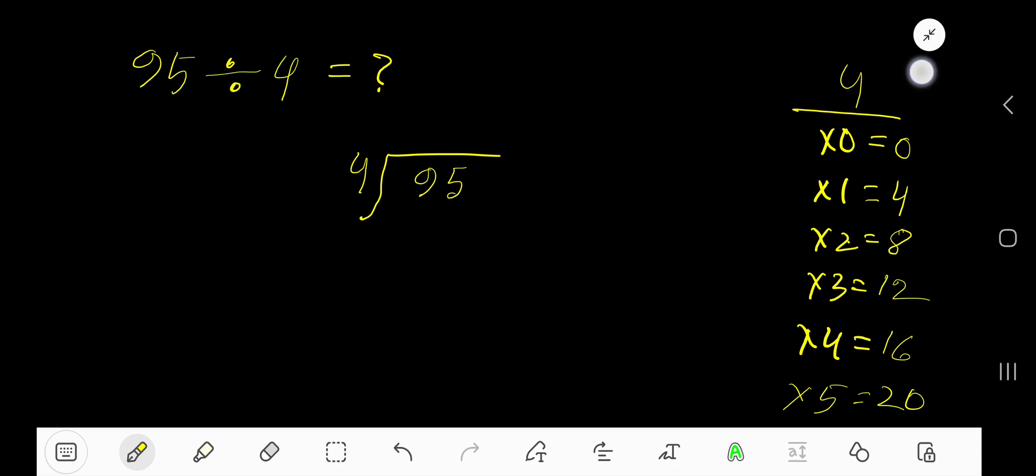95 divided by 4. The divisor is 4, so we need the multiplication table of 4. 4 times 0 is 0, 4 times 1 is 4, 4 times 2 is 8, 4 times 3 is 12, 4 times 4 is 16. To find the multiplication table of 4, just add 4 with the previous step: 0 plus 4 is 4, 4 plus 4 is 8, 8 plus 4 is 12.